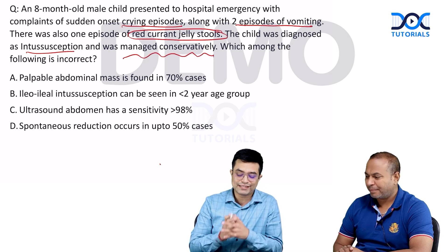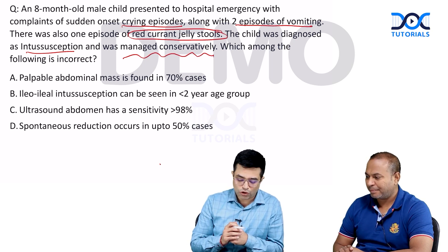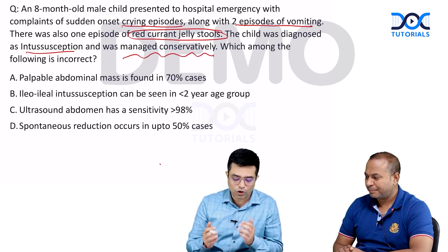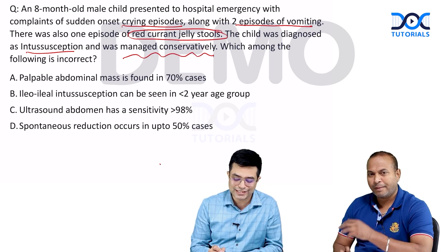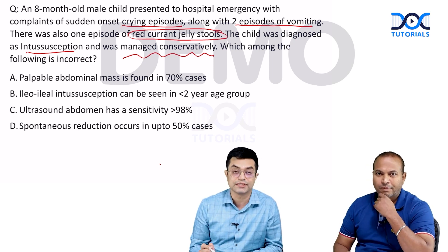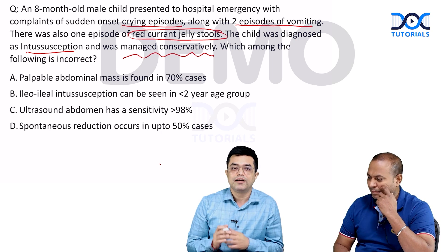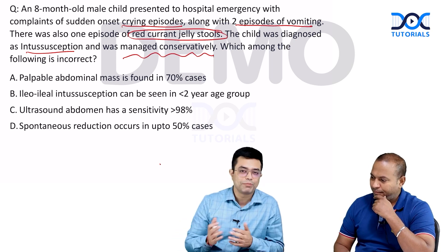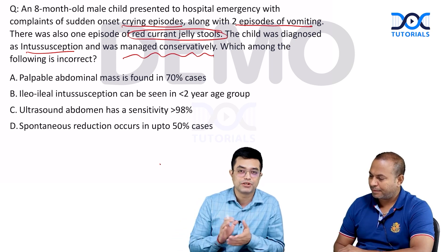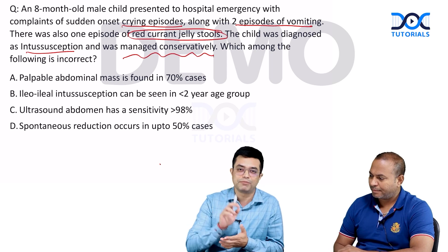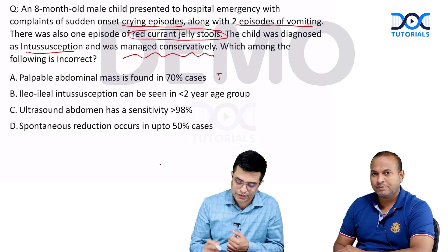Which among the following is incorrect regarding this topic? Look at the four options. Option A: palpable abdominal mass is found in 70% of cases. According to Nelson 21st edition, in 30% of cases there is no palpable abdominal mass, while in 70% you will be able to palpate a sausage-shaped abdominal mass. So option A is a true statement.